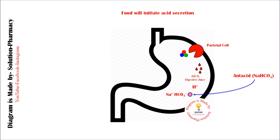Sodium bicarbonate reacts with HCl (hydrochloric acid) in the stomach to form sodium chloride (salt), water, and carbon dioxide gas released as bubbles. The hydrogen ion from HCl reacts with the bicarbonate ion from sodium bicarbonate to form carbonic acid (H₂CO₃), which then dissociates into water and carbon dioxide.